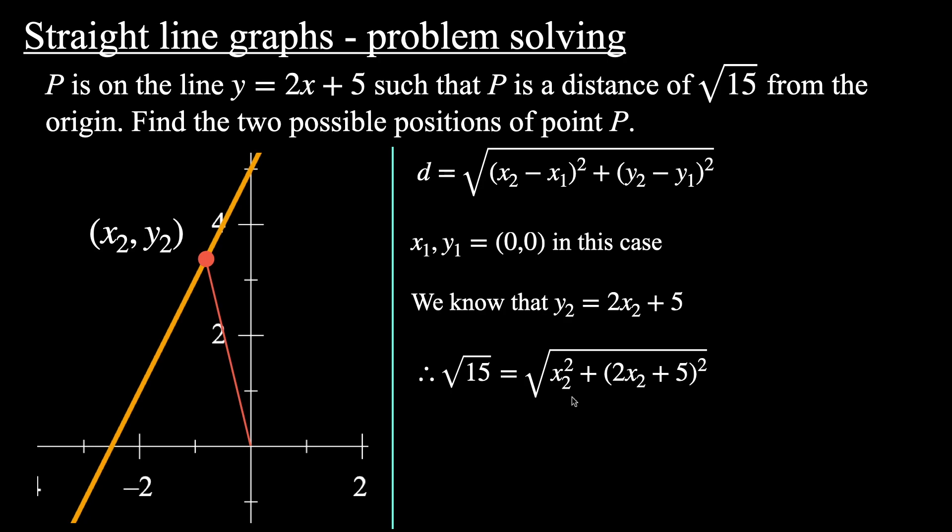We can square both sides to get rid of the square roots. So squaring both sides, we get 15 equal to x² + 4x² + 20x + 25, expanding out those brackets there. And then simplifying this further, we could combine like terms. So we get 5x² + 20x + 10. So x² + 4x² is 5x², and also I subtracted 15 from the right-hand side. So 25 - 15 is 10.